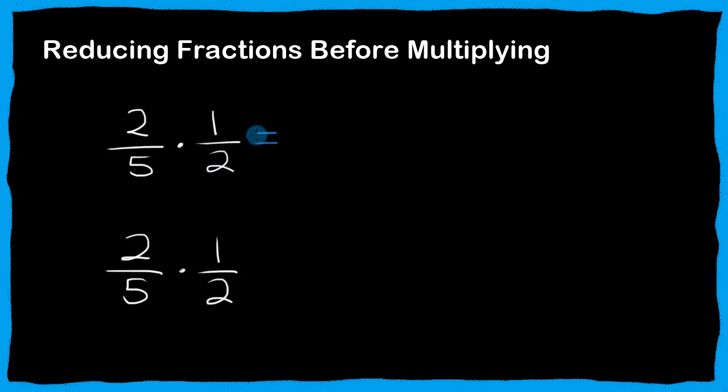So let's do it the way we're used to, where we just multiply across. So two times one is two, and five times two is ten. Okay, so now we can see we have to reduce this, right, by dividing both the numerator and the denominator by two, and they're both even numbers, and then we get one-fifth as the answer.